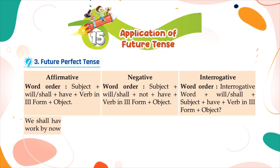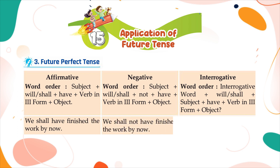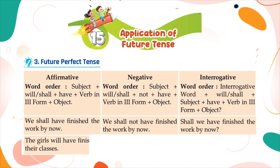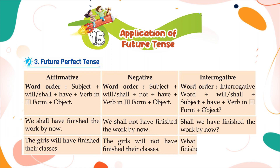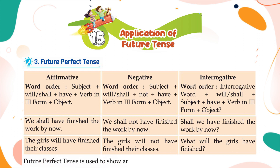Examples: We shall have finished the work by now. We shall not have finished the work by now. Shall we have finished the work by now? The girls will have finished their classes. The girls will not have finished their classes. What will the girls have finished? Future Perfect Tense is used to show an action to be completed in the time to come.